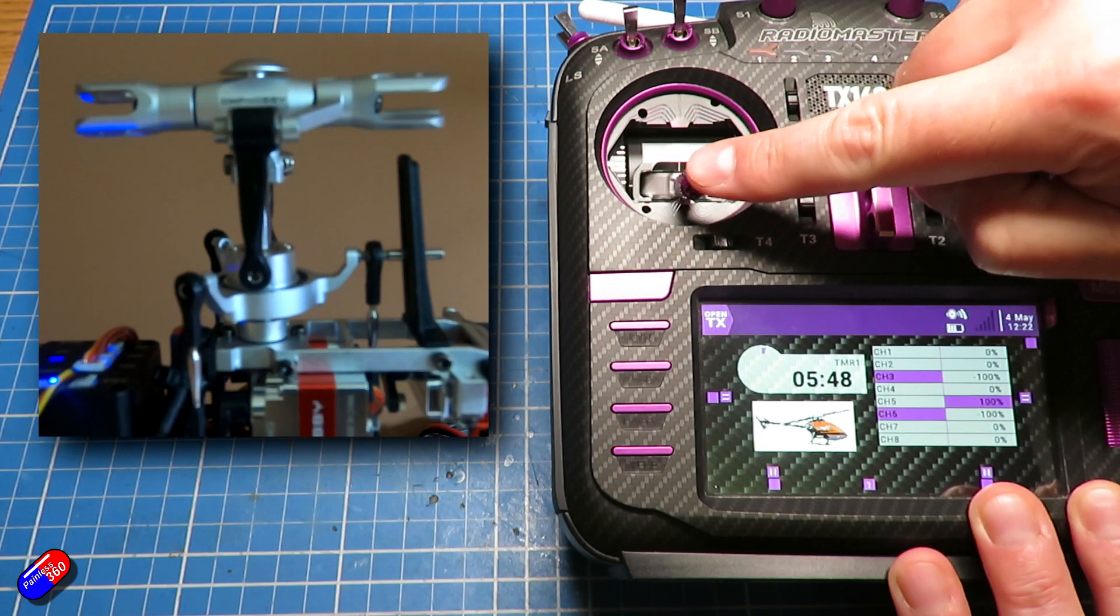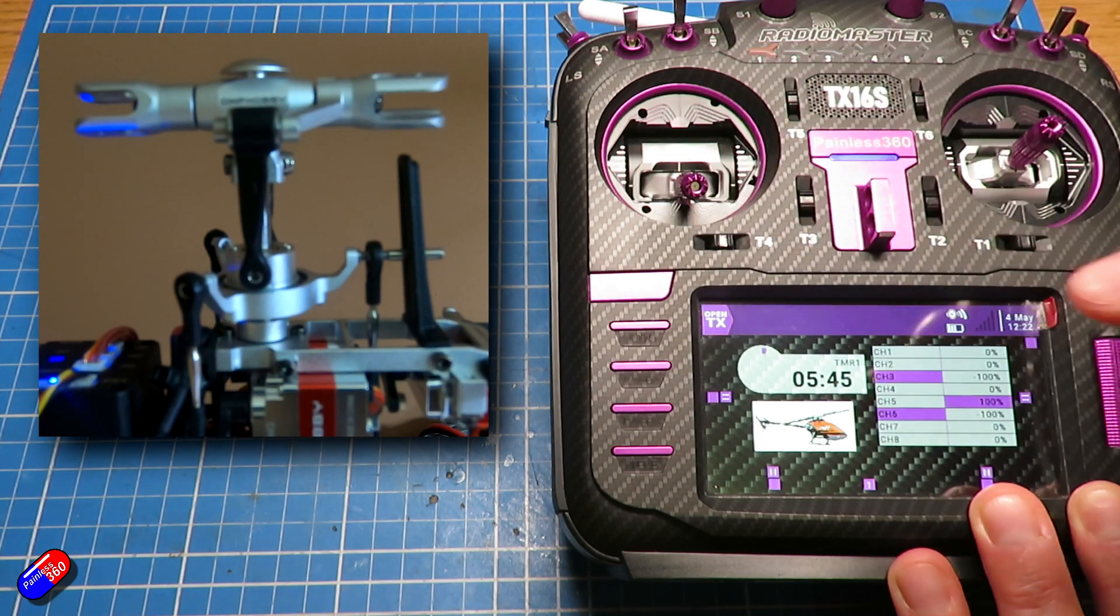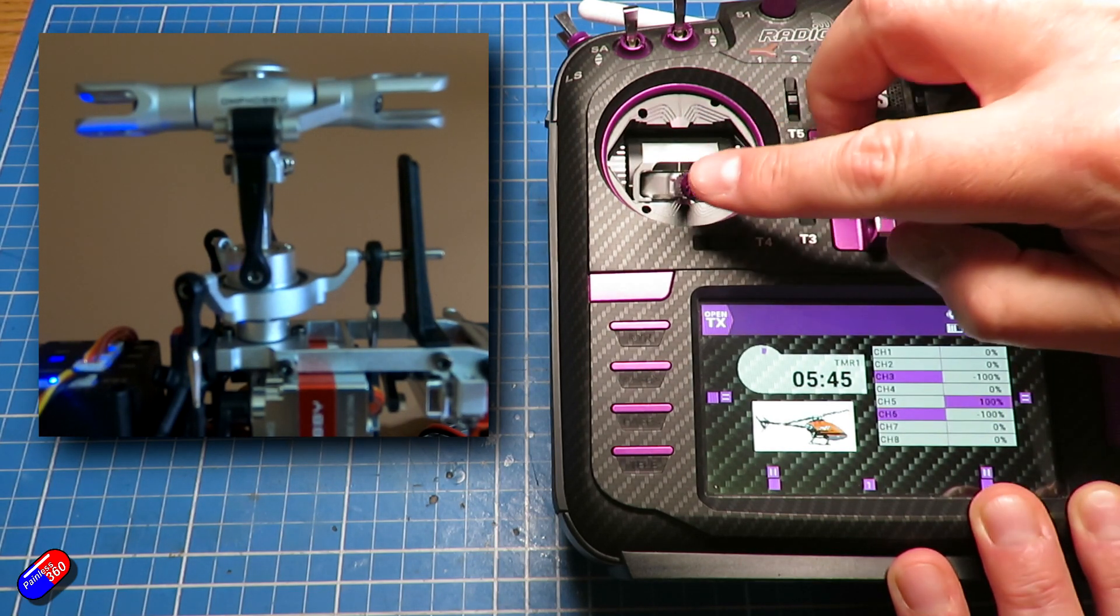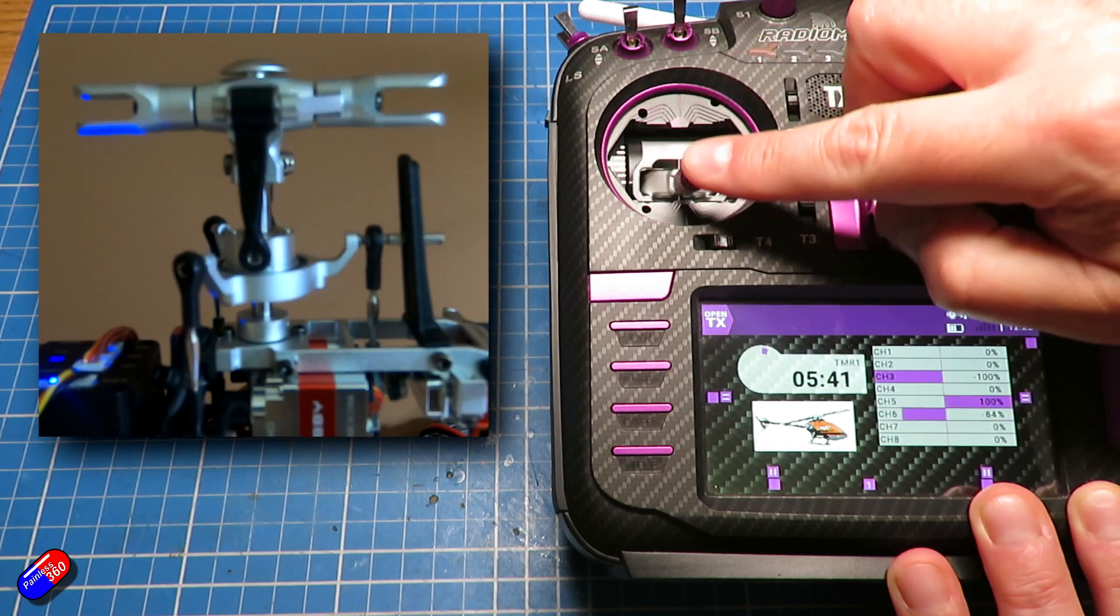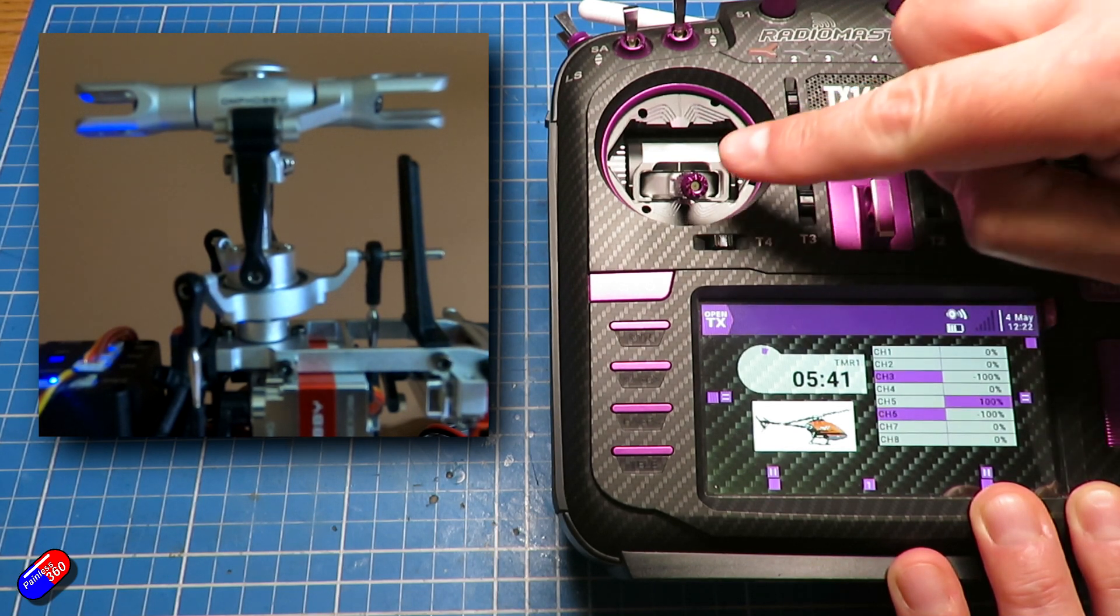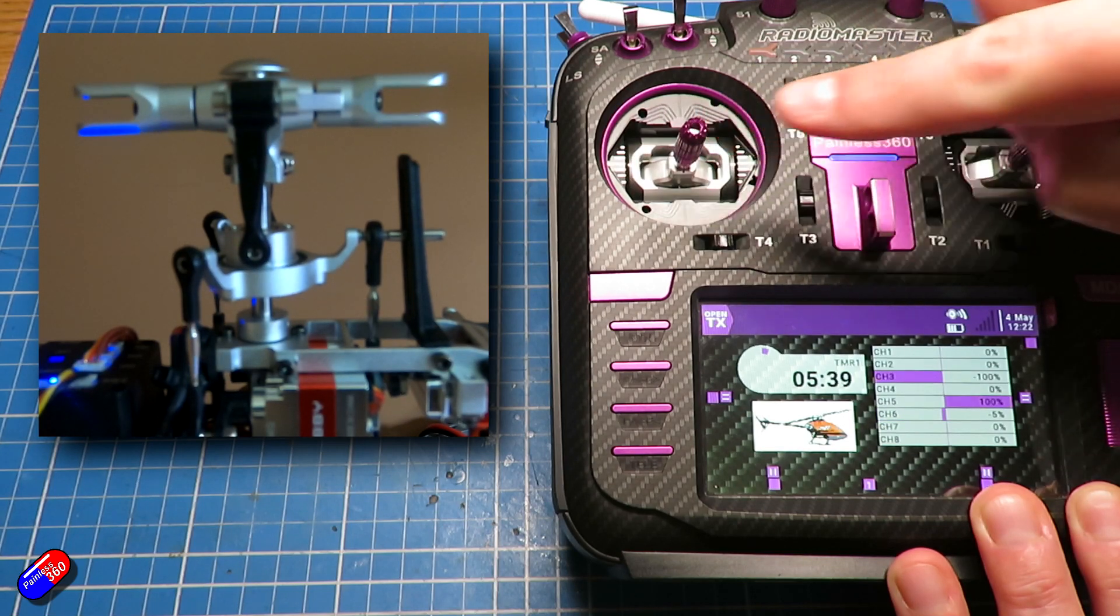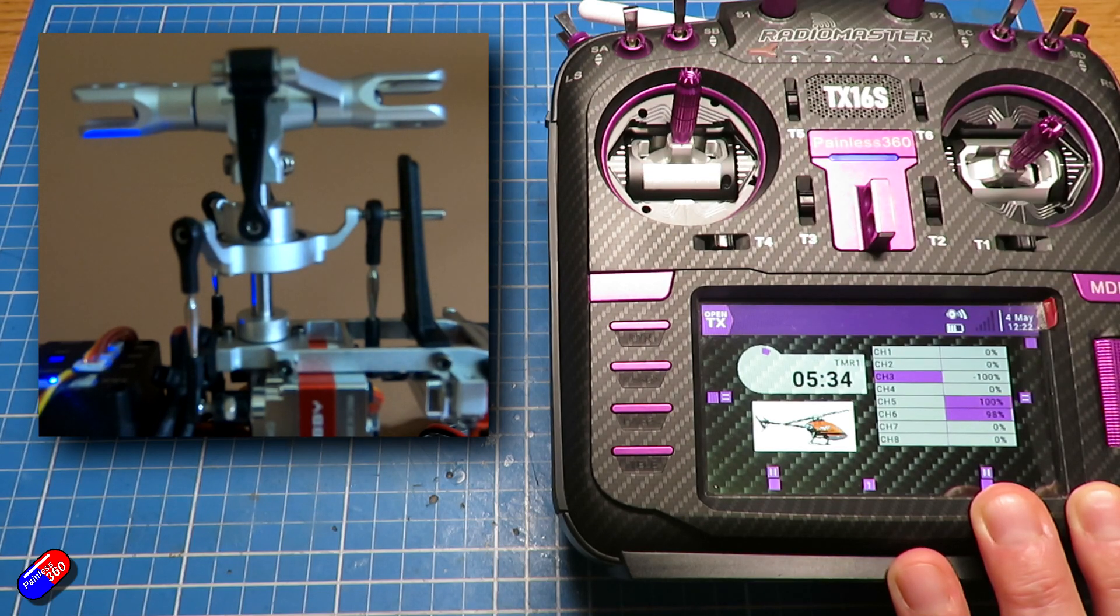And if you watch what's happening as that swash plate is risen and dropped by the three servos that are connected to it, the linkage you see is actually rotating the blade grips. So it goes from a negative value, which gives you very aggressive negative pitch, which will make it descend very sharply, through to about neutral at 50% throttle, up to full positive pitch, which will make it ascend very quickly.